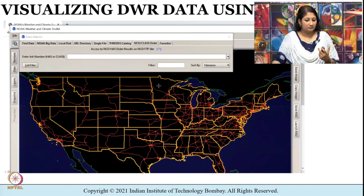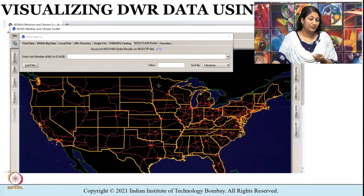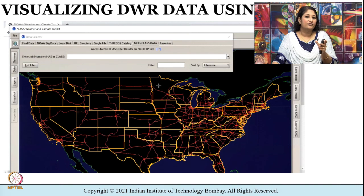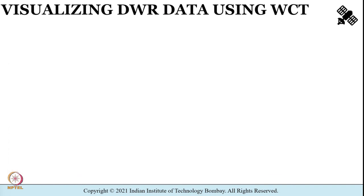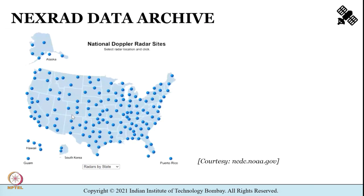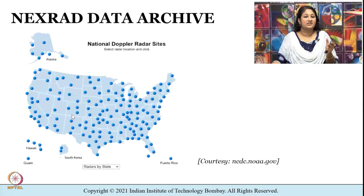In the WCT interface you find the data selector option with choices including Find Data, Big Data, URL Directory, and Single File. In this tutorial, we will visualize the NEXRAD data archive. NEXRAD stands for Next Generation Weather Radar.